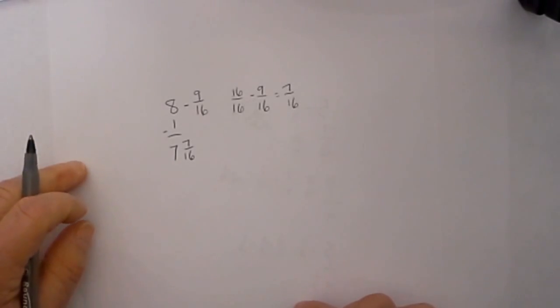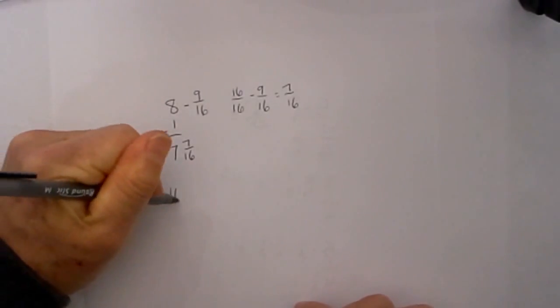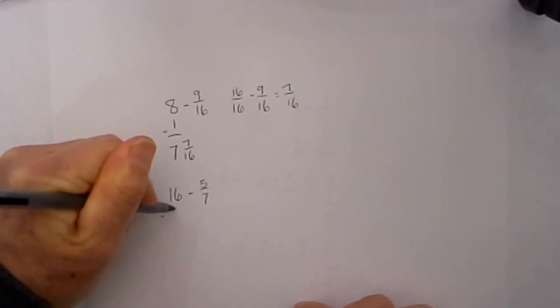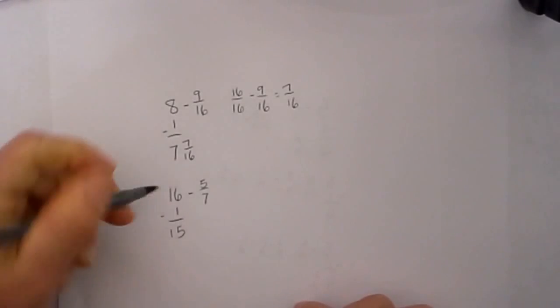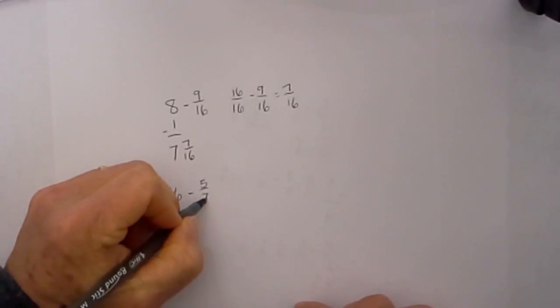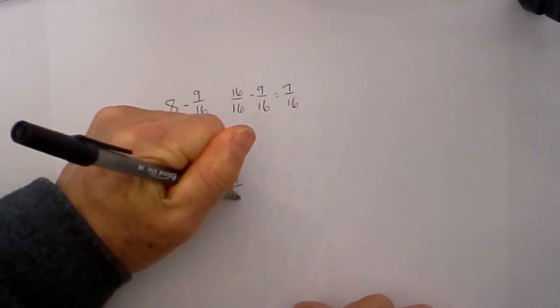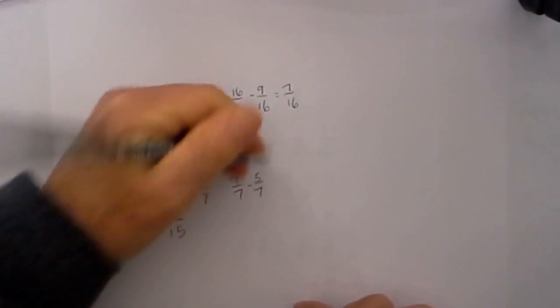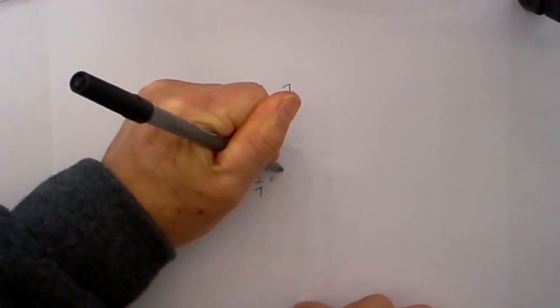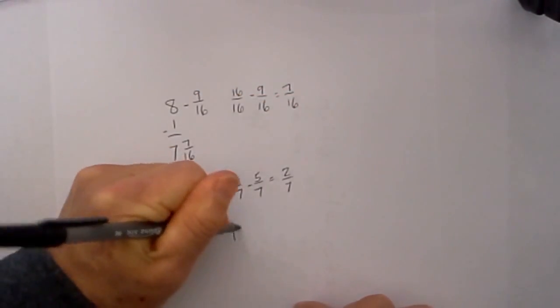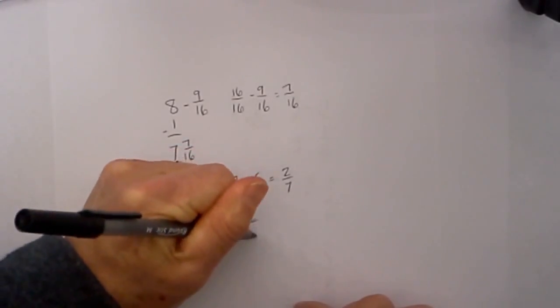And finally, the last one. Let's go with 16 minus 5/7. I will rewrite the 1 as a fraction, looking for the denominator as a clue: 7 over 7 minus 5/7. Denominators are the same, so we can just subtract. 7 minus 5 is 2, so it becomes 15 and 2/7.